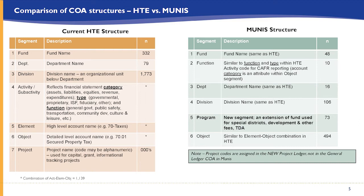The next three segments — activity, subactivity, element, and object — in combination represent the account: asset, liability, equity, revenue, or expense. In our HTE system we have 1,139 of those accounts. The final segment in HTE is the project, and we obviously have thousands of projects. Projects change from year to year and are the most dynamic part of the chart of accounts today.